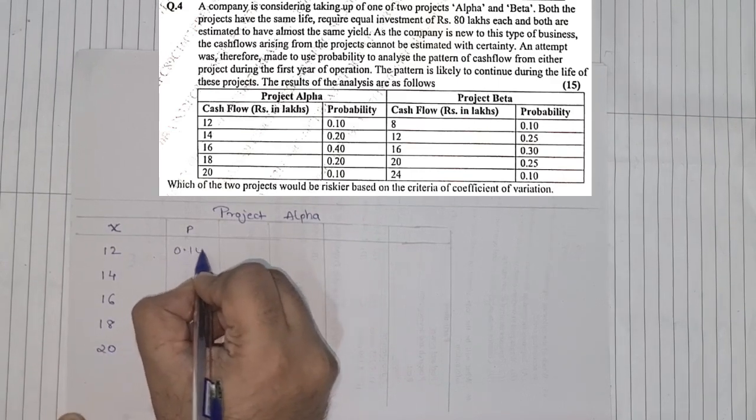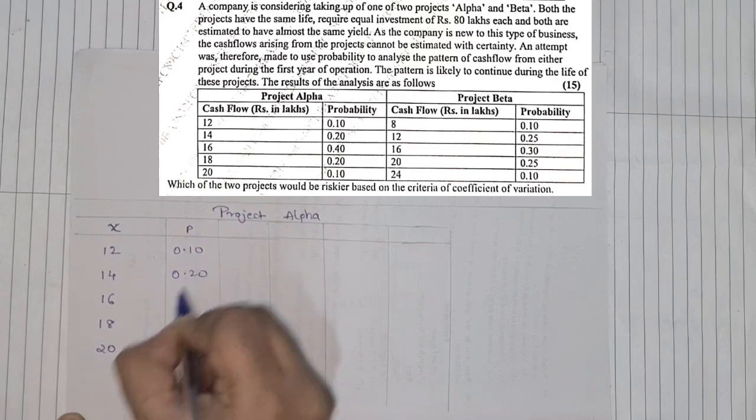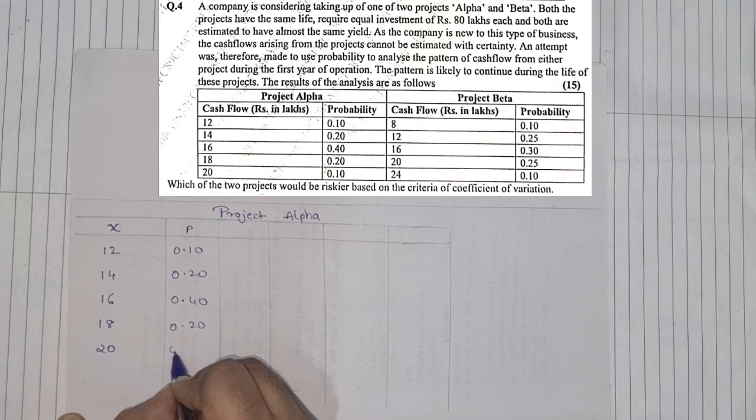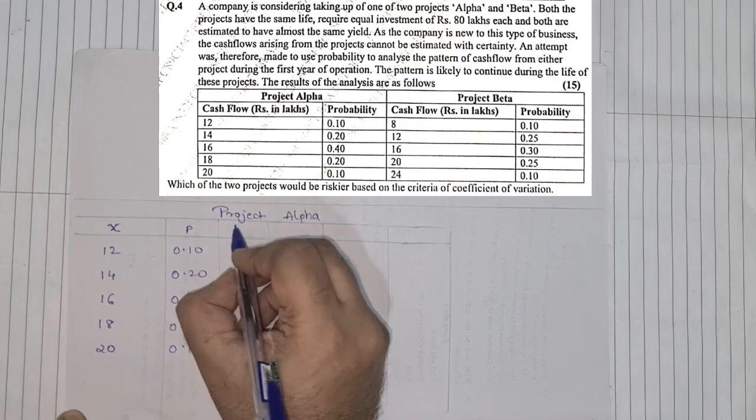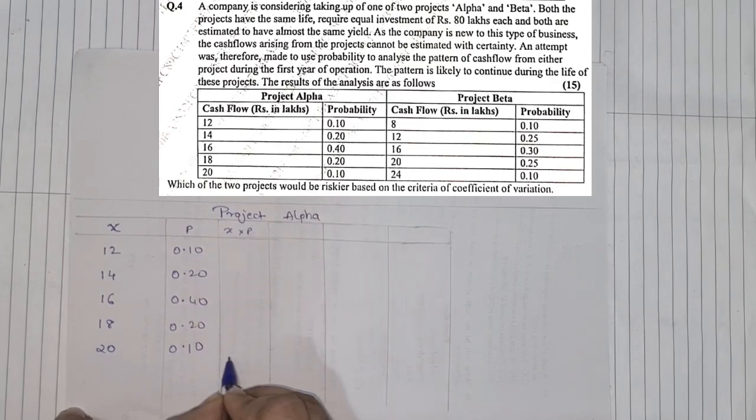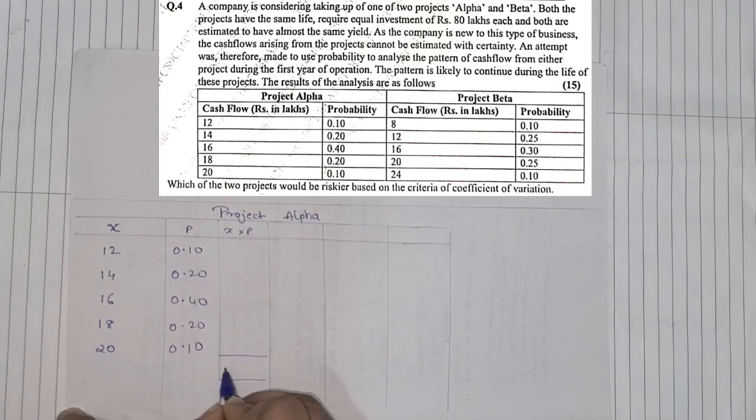Probability is 0.10, 0.20, 0.40, 0.20, and 0.10. We need to make the next column that will be X multiplied by probability, and the total of that will be called as X bar. We will keep that as X bar.